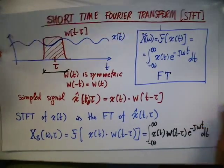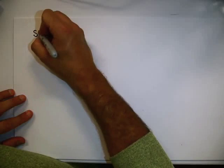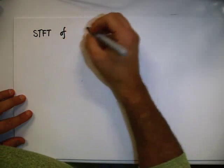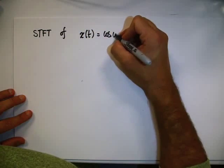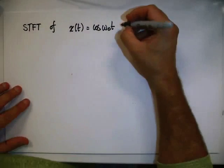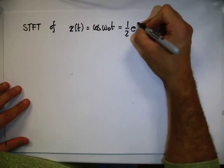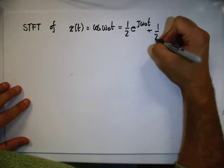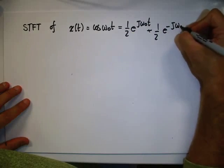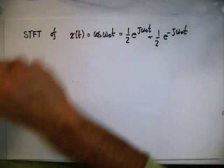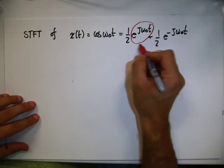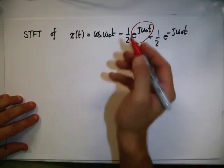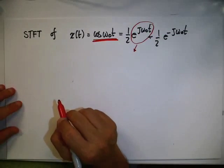Let's do an example. Let's compute the short-time Fourier transform of the signal x of t equal to cosine of omega-naught t. Of course, we know that this can be written as one-half e to the j omega-naught t plus one-half e to the minus j omega-naught t. So what we'll do is compute the short-time Fourier transform of this signal, and then we can compute the one for the cosine.